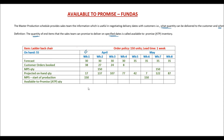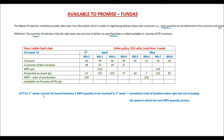ATP for the first week equals current on-hand inventory plus the MPS quantity to be received in the first week (if any) minus the cumulative total of booked orders up to but not including the week in which the next MPS quantity arrives. Essentially, the on-hand inventory and MPS quantity are your supply, and the cumulative booked orders represent demand. Here, the next MPS quantity arrives in week 2, so we only consider week 1 orders.